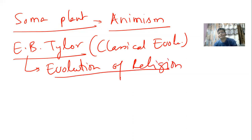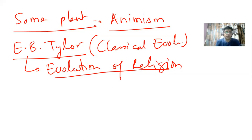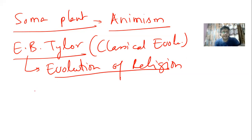Tyler was a classical evolutionist and is called the Father of Cultural Anthropology — he is responsible for establishing anthropology as an individual subject, separate from sociology, in British universities like Oxford and Cambridge. One of Tyler's major contributions is the evolution of religion. He gave a concept of how religion originated and evolved. Tyler said that religion began as animism.